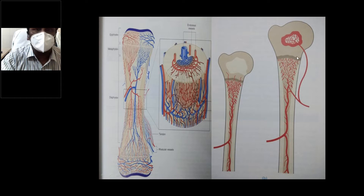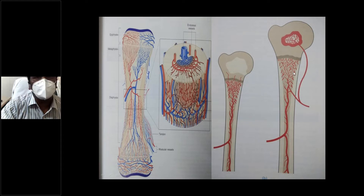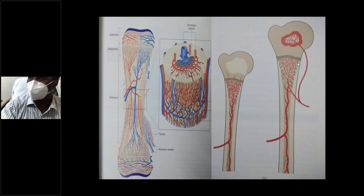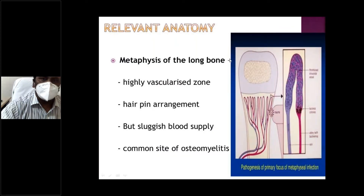After 16 months, metaphyseal blood vessels no longer cross the growth plate; they do not supply the epiphysis. A separate artery supplies the epiphysis, making infection there less likely. So from 16 months to 16 years, infection lodged in the metaphysis stays there — it cannot enter the epiphysis because the growth plate acts as a barrier. After 16 years, epiphyseal closure removes this barrier.